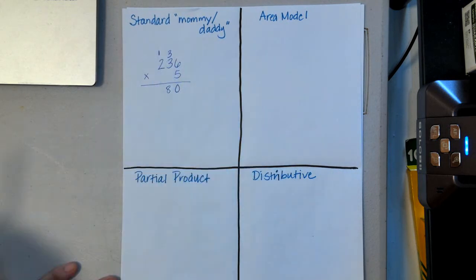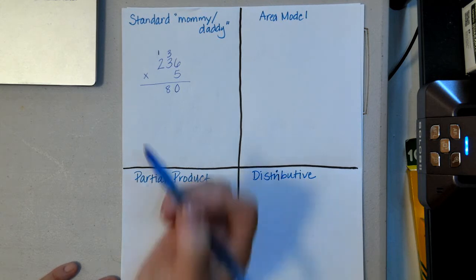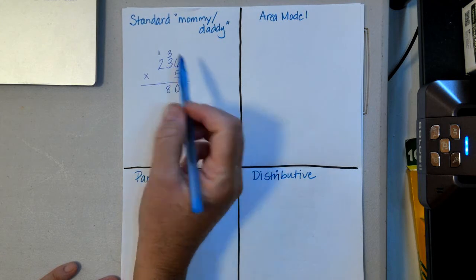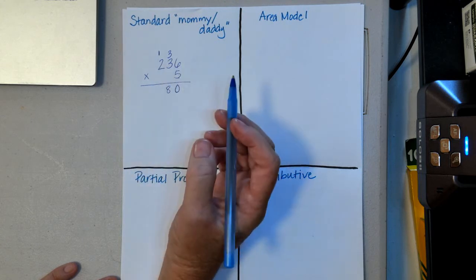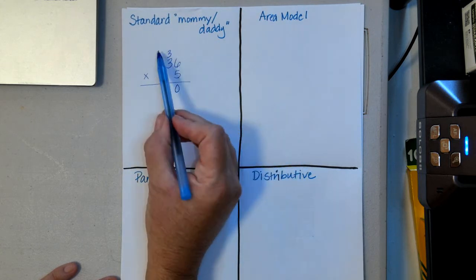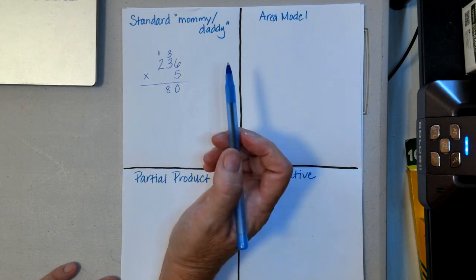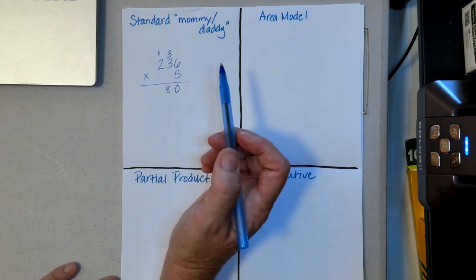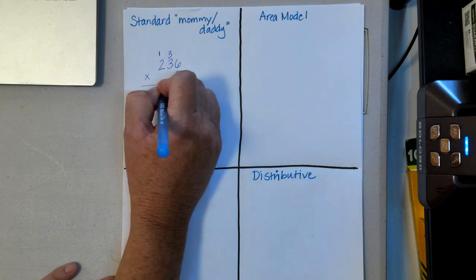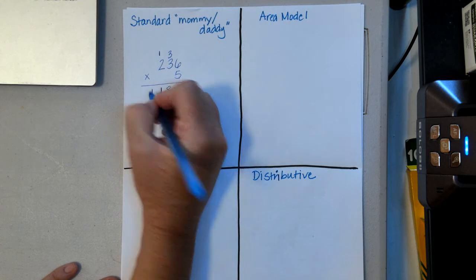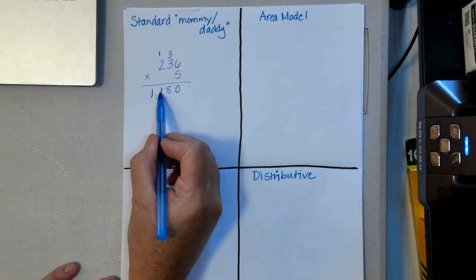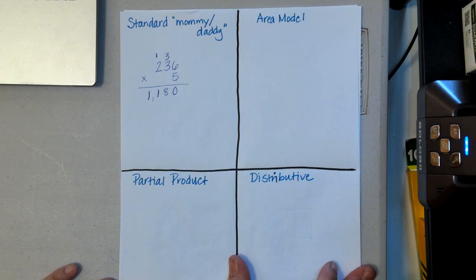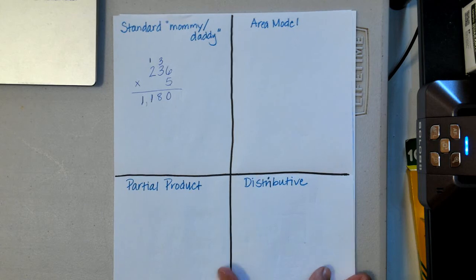I need to regroup eighteen tens: I put eight tens here and carry one hundred. Now I multiply five times two hundreds, which gives me ten hundreds, plus the one hundred I carried gives me eleven hundreds. I regroup again — I put one hundred here and carry one thousand. So my answer is one thousand one hundred and eighty.